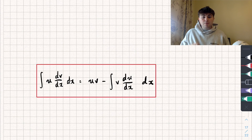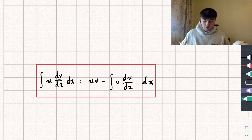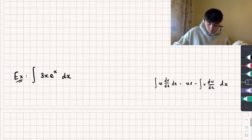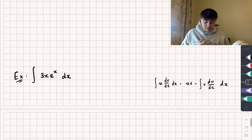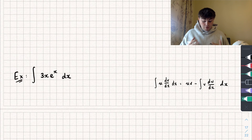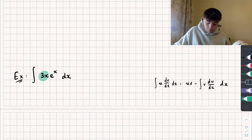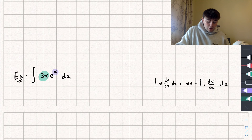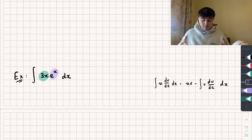This looks confusing, but in an example it will make a bit more sense. So let's take a look at the first one, where we want to integrate 3x multiplied by e to the x with respect to x. Hopefully you can see our two functions are going to be 3x and e to the x.